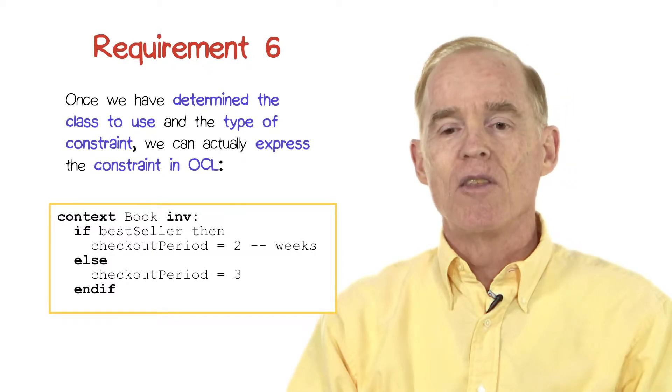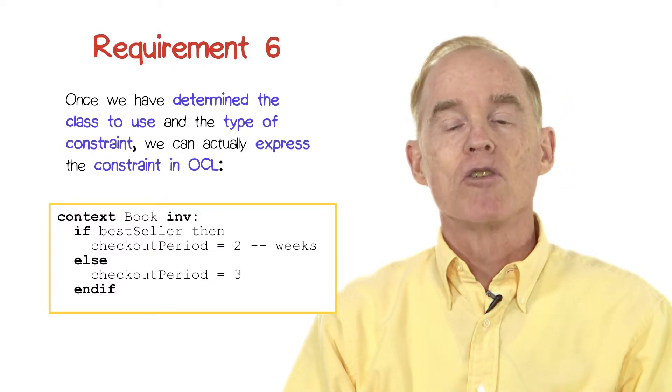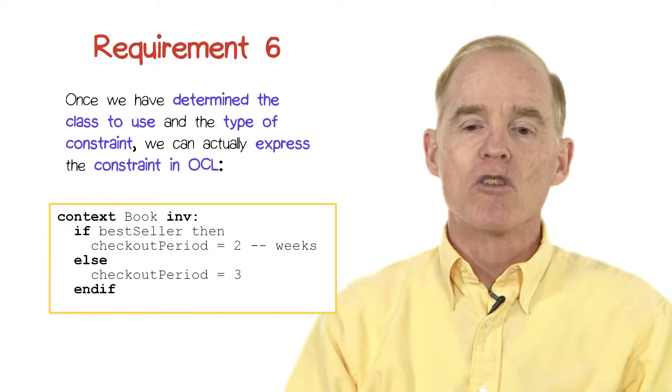So once we have determined the class to use and the type of constraint, we can actually express the constraint in OCL. And here's what it looks like.